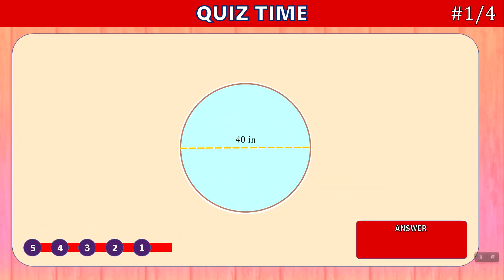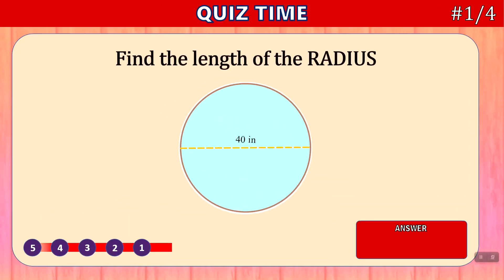And now it's quiz time. Find the length of the radius — you have 5 seconds. Time's up. The answer is 20 inches. We can see that the diameter is 40, so the radius is going to be half of 40, which is 20.